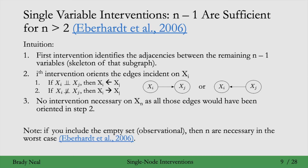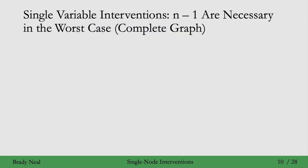That's the intuition for why n minus 1 single variable interventions are sufficient to identify the causal graph in the general case. Note that if you count the observational data — the empty set intervention — as one of the interventions, then you actually need n interventions in the worst case, not n minus 1. But if the empty set is not counted as an intervention, you just need n minus 1. You can check out the paper by Eberhard et al., 2016 for more.